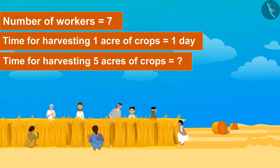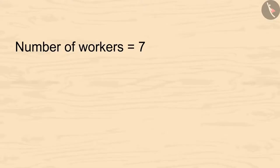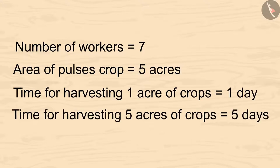Kids, you can pause the video and calculate it. Yes, 5 acres of pulses will take 5 days to be harvested.